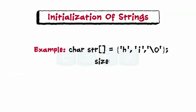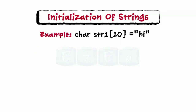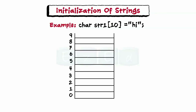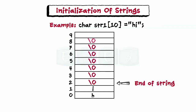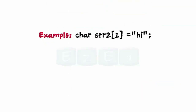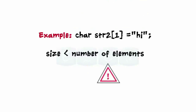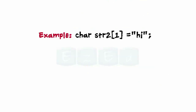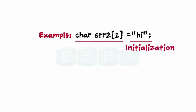C also allows us to initialize an array without mentioning its size, where its size is determined automatically based on the number of elements listed. We can also initialize a character array with a size larger than the number of characters in the initializers — the computer will create the array and assign null characters to the remaining elements. If we declare a string with a size lesser than the number of elements, then it is an illegal declaration. Note that we cannot separate initialization from declaration.